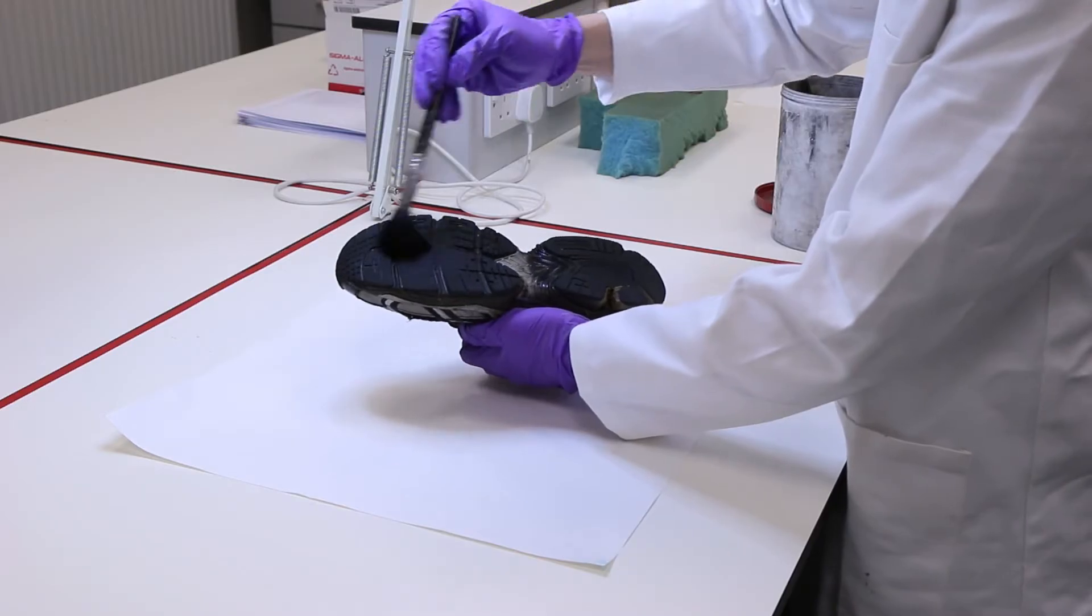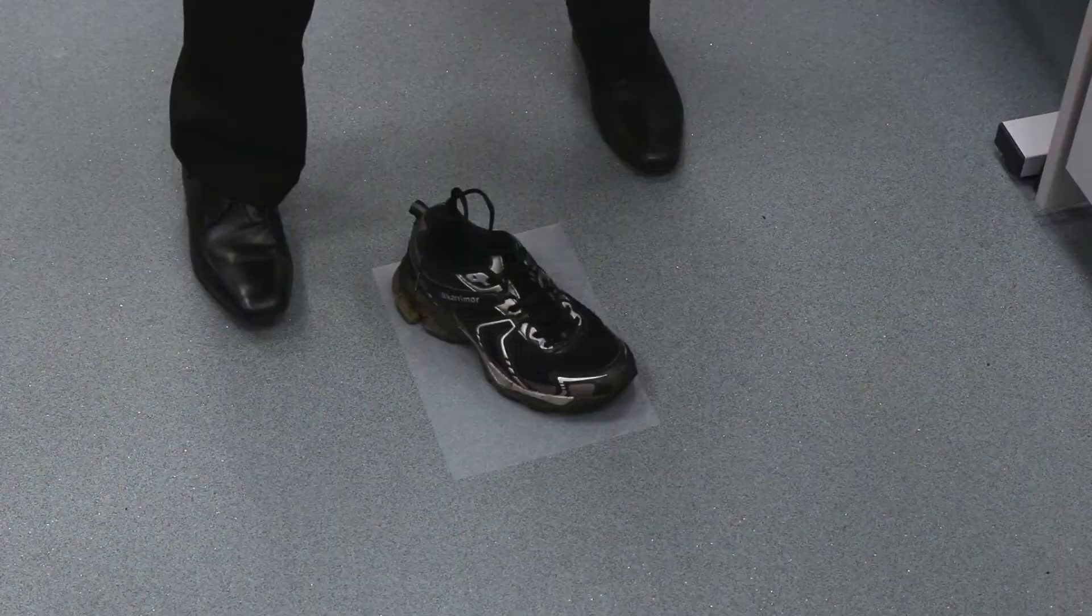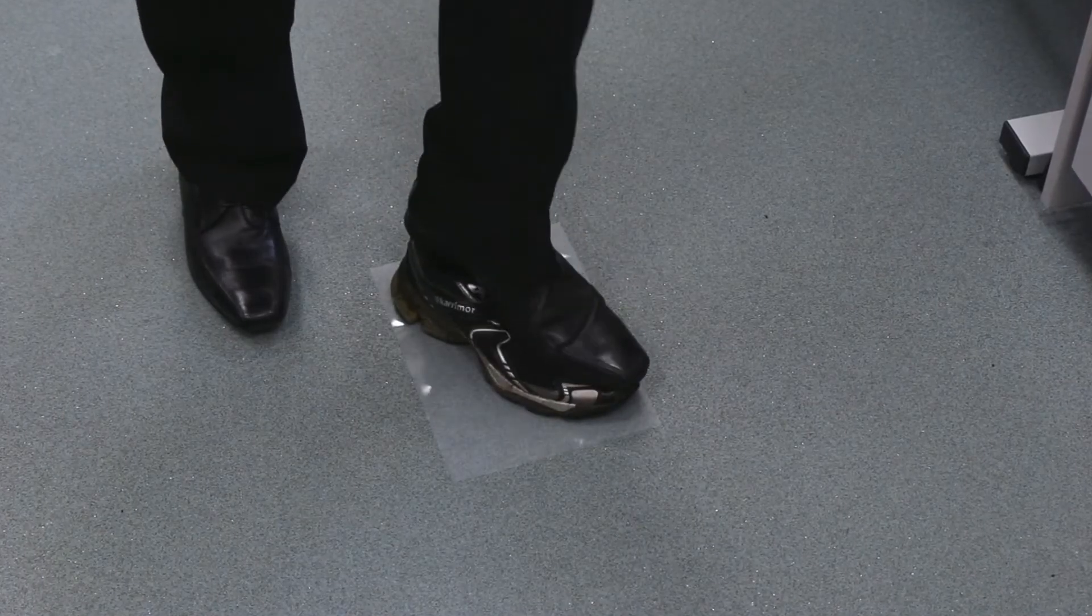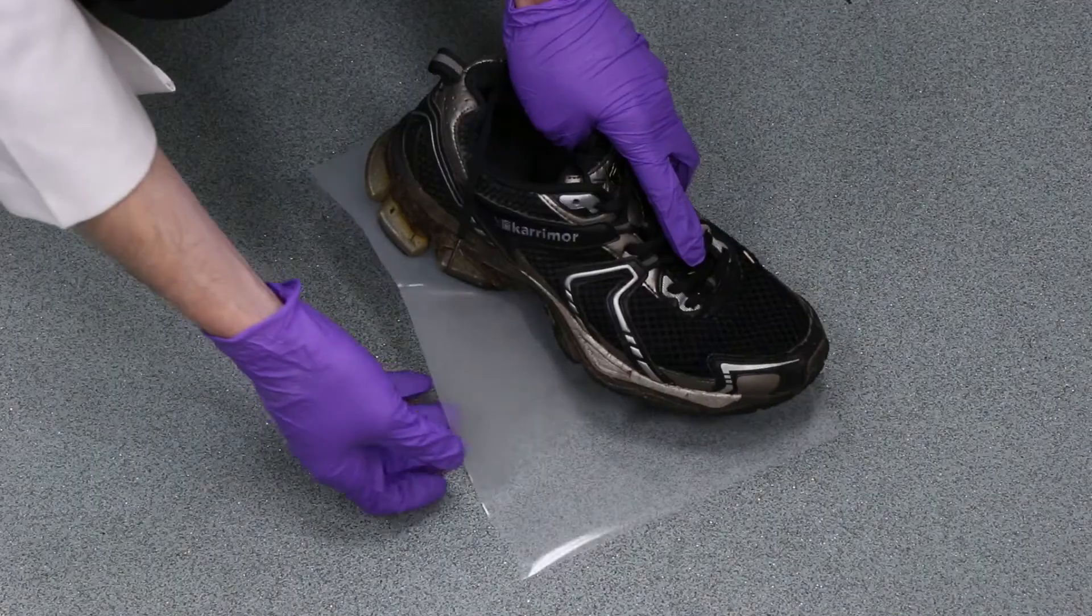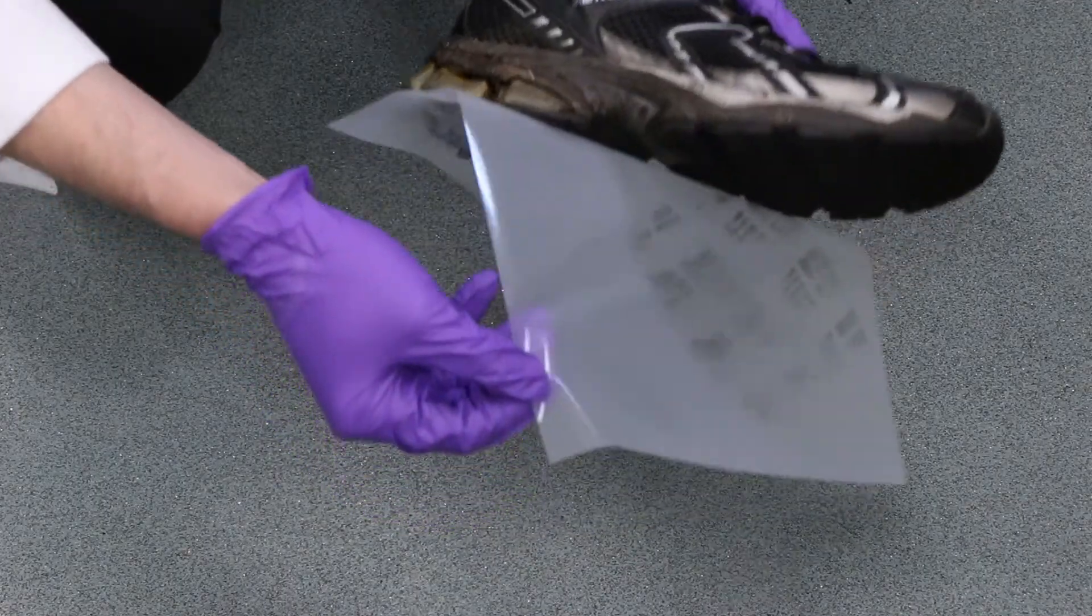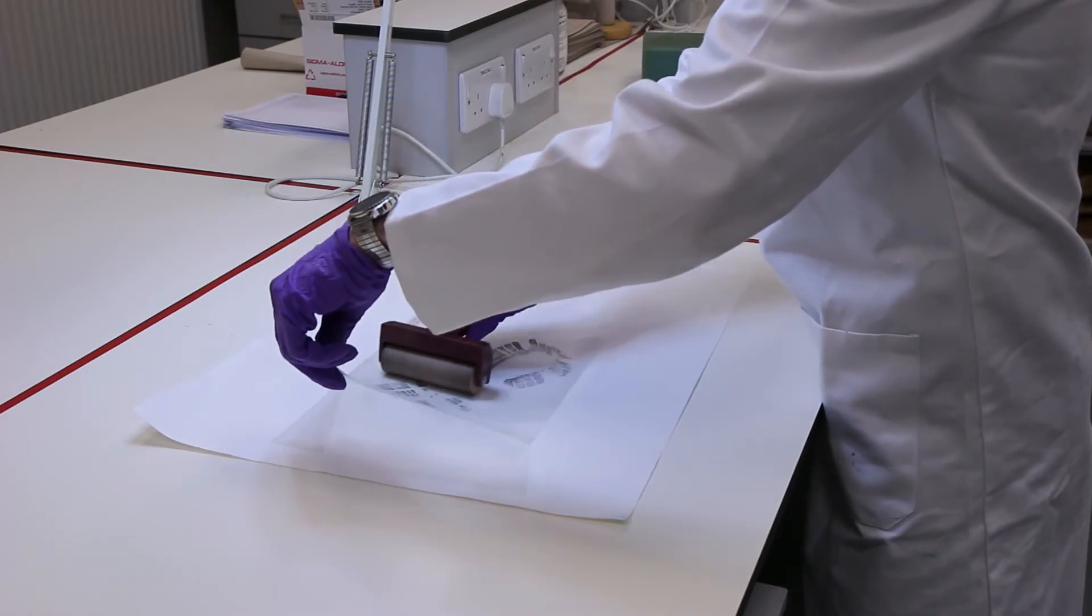The process involves dusting the shoe with black powder, putting a clear film on the floor that has a sticky back to it, and then placing the shoe on the film and applying some weight to the shoe as if it was worn. Then the sticky film can be peeled off and a clear film put over the top of it.